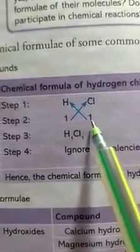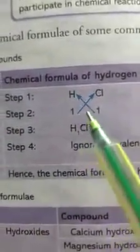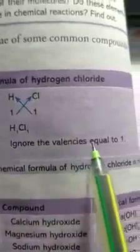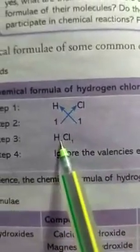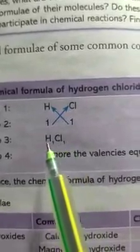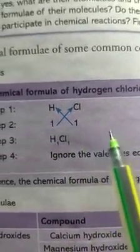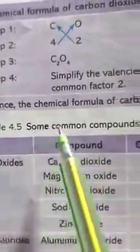Now the chemical formula of hydrogen chloride. Step 1: write the symbol — hydrogen is H, chlorine is Cl. Step 2: write the valency — hydrogen has valency 1, chlorine also has valency 1. Step 3: crisscross the valency. Since both are equal to 1, we ignore them. There is no need to write H₁Cl₁ — you simply write HCl.